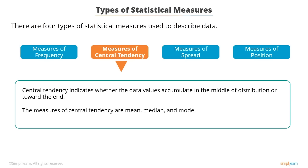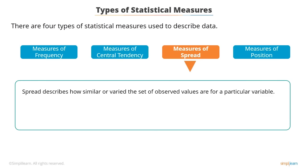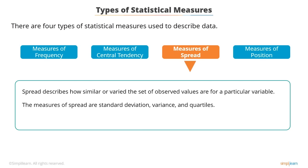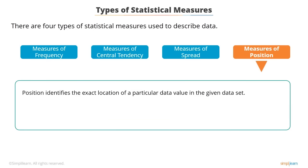The measures of central tendency are mean, median, and mode. Spread describes how similar or varied the set of observed values are for a particular variable. The measures of spread are standard deviation, variance, and quartiles — also called measures of dispersion. Position identifies the exact location of a particular data value in the given data set, and the measures of position are percentiles, quartiles, and standard scores.